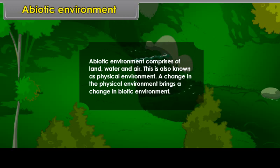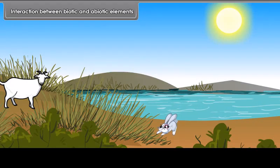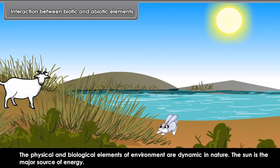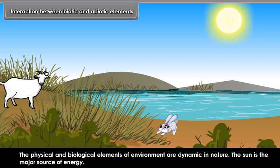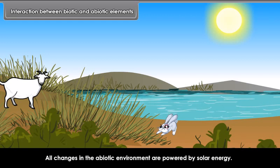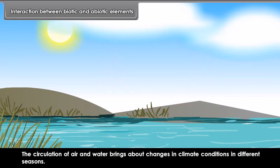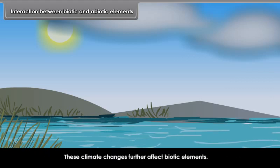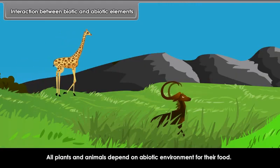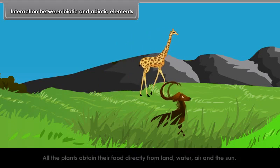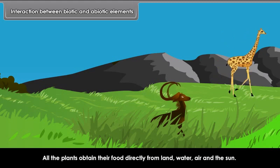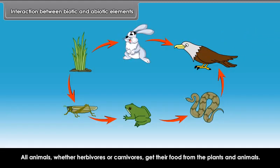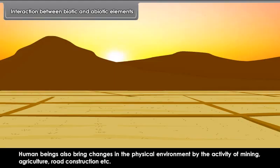Interaction between biotic and abiotic elements. The physical and biological elements of environment are dynamic in nature. The sun is the major source of energy. All changes in the abiotic environment are powered by solar energy. The circulation of air and water brings about changes in climate conditions in different seasons. These climate changes further affect biotic elements. All plants and animals depend on abiotic environment for their food. All plants obtain their food directly from land, water, air and the sun. All animals, whether herbivores or carnivores, get their food from plants and animals. Human beings also bring changes in the physical environment through activities of mining, agriculture, road construction, etc.